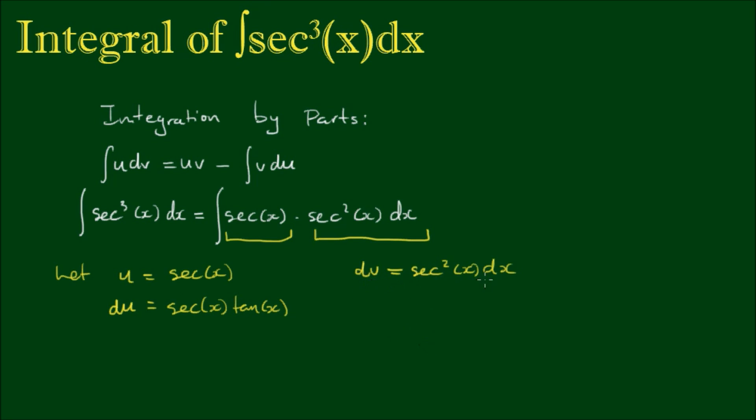And if I integrate the dv part, dv integrates to tan(x). Then the integral of u dv is equal to u times v minus the integral of v du.